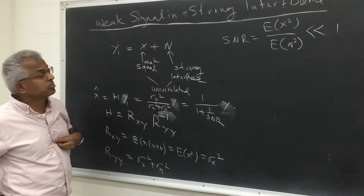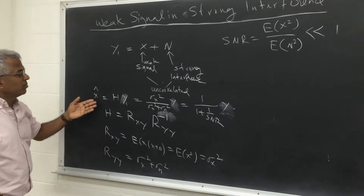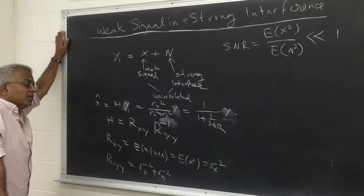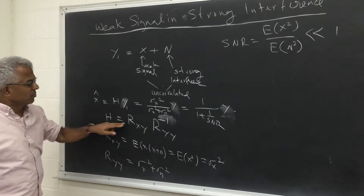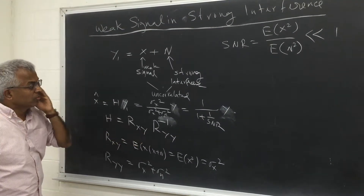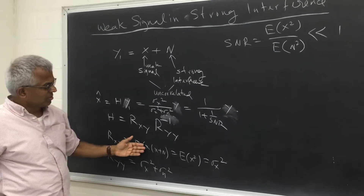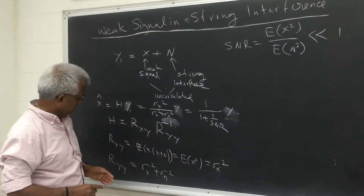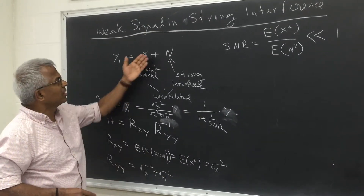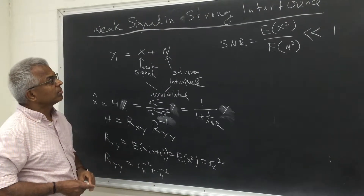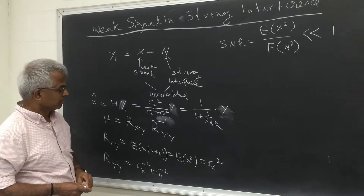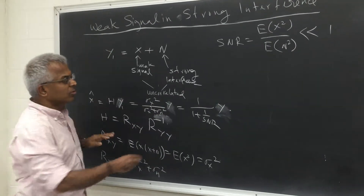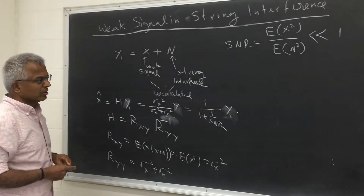Suppose you only have one observation and you use a linear estimator. Then the best estimator is of course Rxy · Ryy inverse. In this case, Rxy is simply the signal power, since the signal and noise are uncorrelated. And Ryy is sigma x squared plus sigma n squared. If you substitute that, it simply turns out that you just scale the data — that's the best thing you can do.